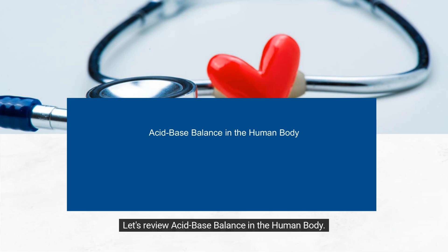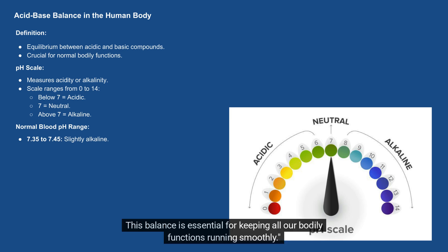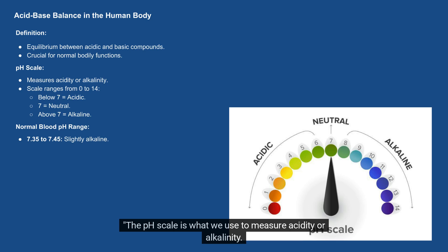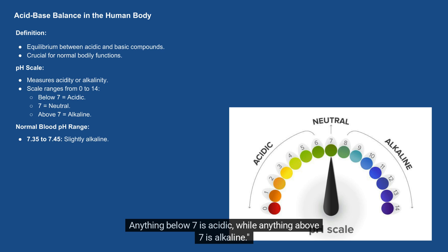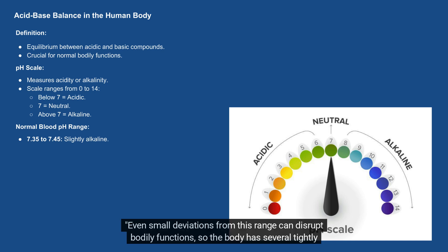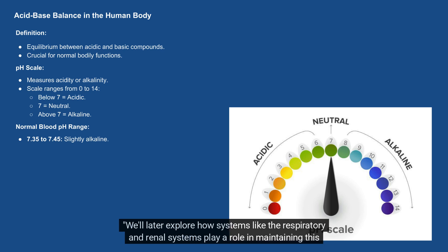Let's review acid-base balance in the human body. This refers to the body's ability to maintain equilibrium between acidic and basic or alkaline compounds — essential for keeping all bodily functions running smoothly. The pH scale measures acidity or alkalinity, ranging from 0 to 14, with 7 being neutral. Anything below 7 is acidic, while anything above 7 is alkaline. The normal pH range for blood is 7.35 to 7.45, which is slightly alkaline. Even small deviations from this range can disrupt bodily functions, so the body has several tightly regulated mechanisms to keep this balance in check.